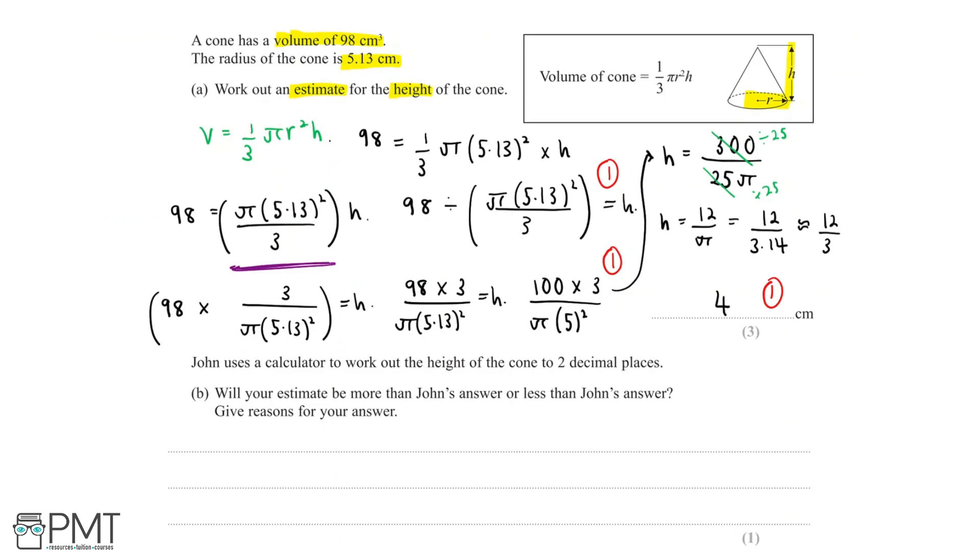In part B, we're told that John uses a calculator to work out the height of the cone to two decimal places. We're asked to find out whether our estimate will be more than John's answer or less than John's answer, and we need to give a reason why this is. When we're looking at our calculation for height, we said that the actual value of height is equal to 98 times 3 divided by π multiplied by 5.13 squared.